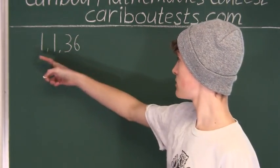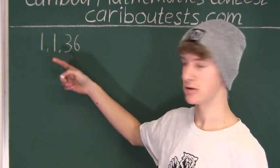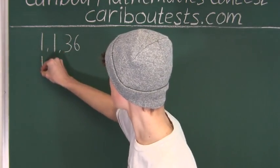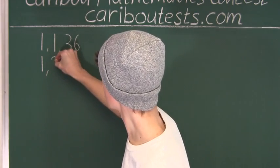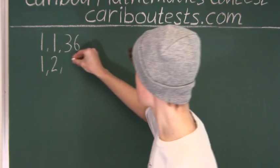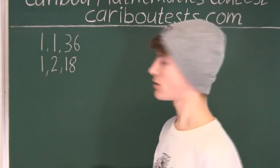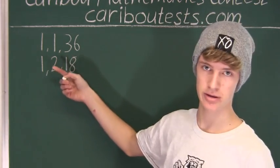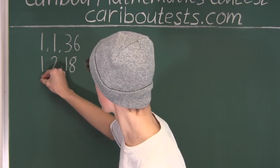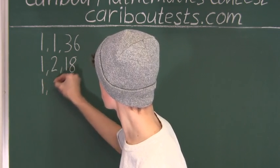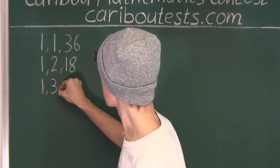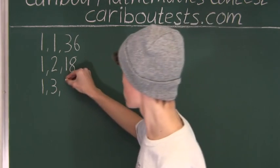Now the next biggest factor of 36 is 2. So we can write 1 again. 36 divided by 2 is 18. The next biggest factor of 36 is 3. And then 36 divided by 3 is 12.